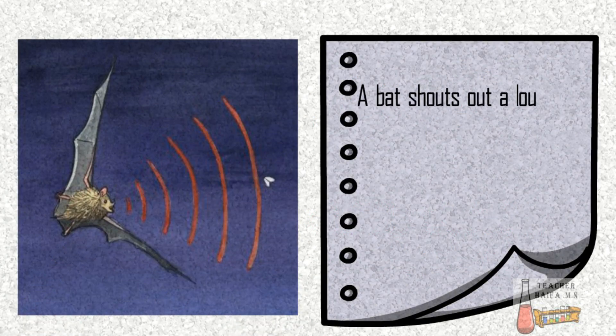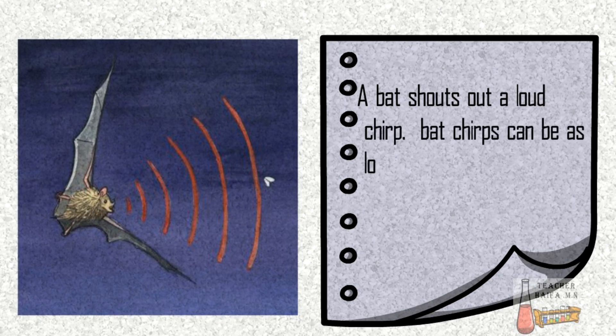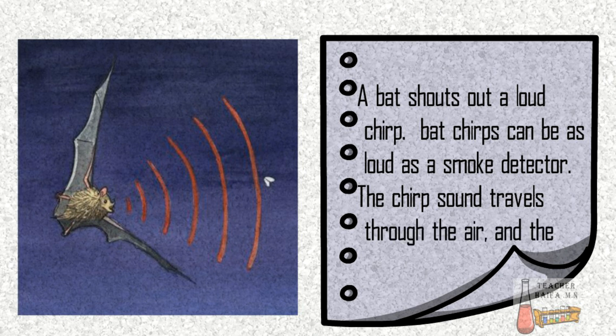A bat shouts out a loud chirp. Bat chirps can be as loud as a smoke detector. The chirp sound travels through the air, and the bat begins to listen for any echoes.